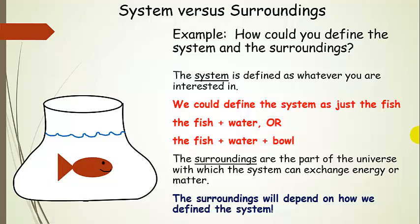Basically, you define the system for whatever is convenient for what you want to study. The things directly around it are the surroundings — they can exchange energy and matter — and the surroundings are actually going to depend on how we define the system. So for instance, if we define the system as the fish, then the surroundings would include the fishbowl and the water.